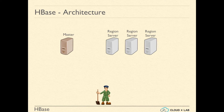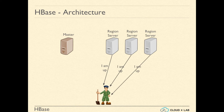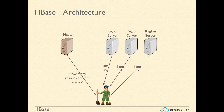Zookeeper is used for discovering the region servers. Each region server informs Zookeeper when it comes online by creating an ephemeral Z node. The master checks with Zookeeper to find out the region servers and their IP addresses.